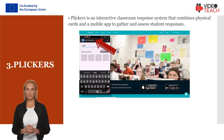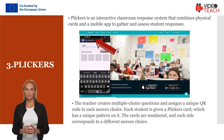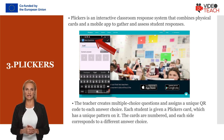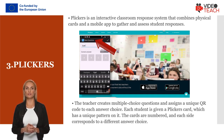Plickers is an interactive response system that combines physical cards and a mobile app to gather and assess student responses. It is designed to engage students in real-time discussions and provide teachers with immediate feedback. During a lesson, the teacher displays the question using a projector or interactive whiteboard, and students hold up their Plickers cards with their selected answer facing up. The teacher uses a mobile device with the Plickers app to scan the classroom, capturing the students' responses. The app uses the camera to read the Plickers cards and record the answers associated with each student. Plickers offers a simple and cost-effective way to incorporate interactive assessments into the classroom, as it only requires printed Plickers cards and a mobile device with the app. It encourages active participation and allows teachers to assess student comprehension quickly and efficiently.